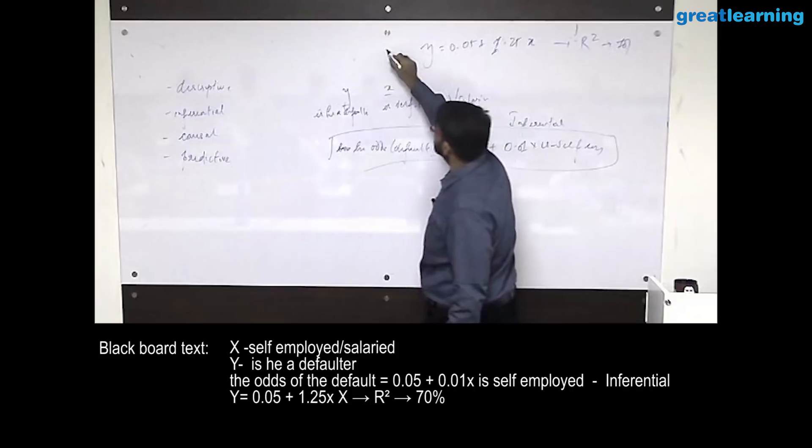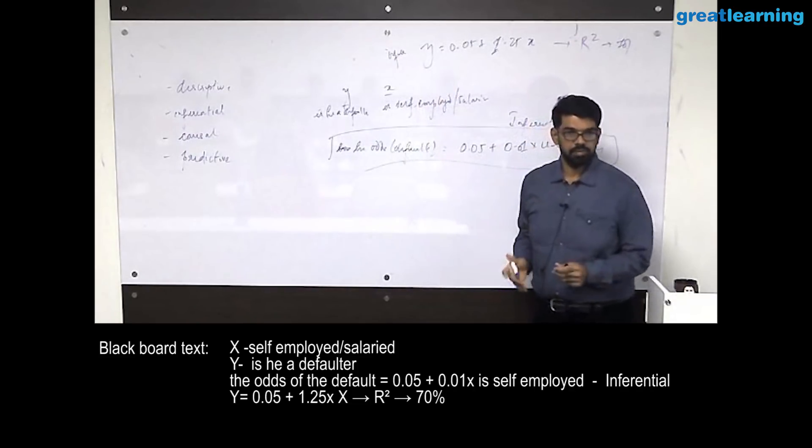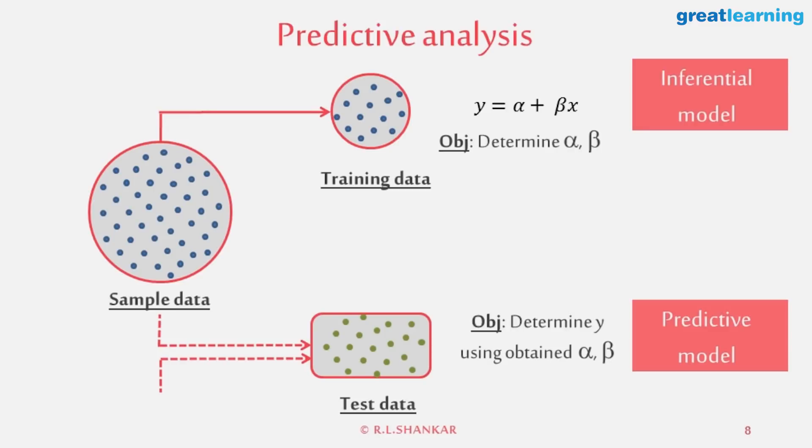Now I've determined that this is probably the best estimate to get. Now I go and do a prediction. So I now start estimating Y's for different X. How do I know whether my model is accurate or not? What is my measure of accuracy?